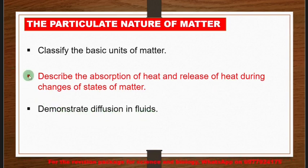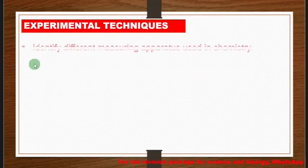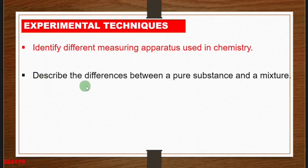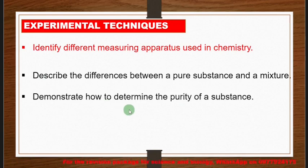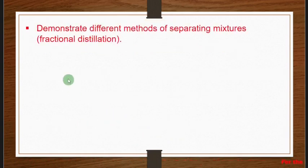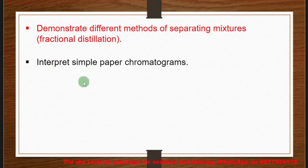Moving on to experimental techniques, you have to look at identifying different measuring apparatus used in chemistry, describe the differences between a pure substance and a mixture, demonstrate how to determine the purity of a substance, and explain the importance of purity. You also need to demonstrate different methods of separating mixtures — fractional distillation is expected to be present in this year's exam — and also interpret simple paper chromatograms.